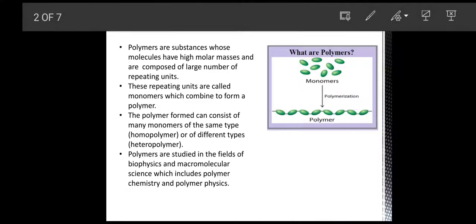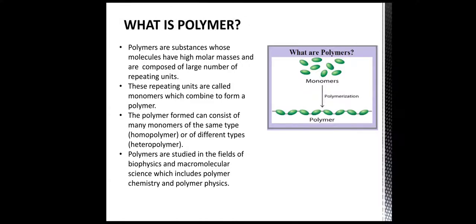Polymer is a macromolecule made up by joining small units called monomers. These monomers joining together can be of the same type, which is called a homopolymer, or of different types, which is called a heteropolymer.